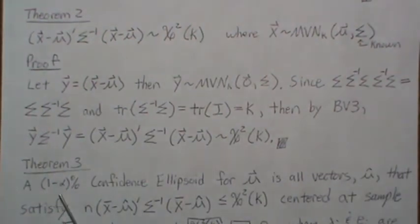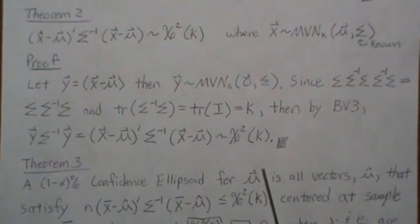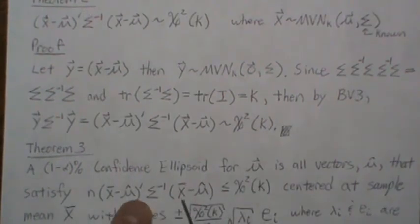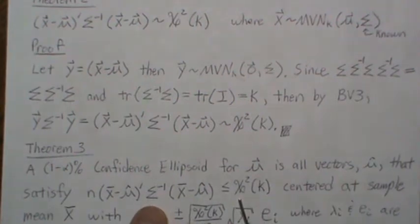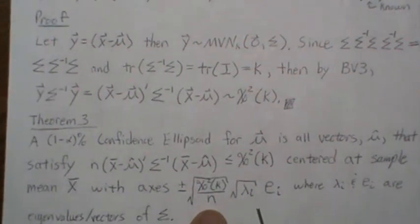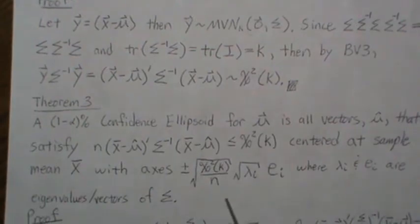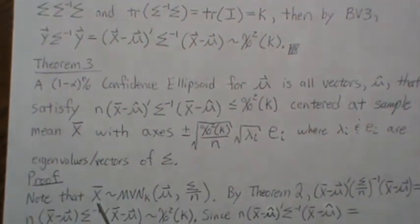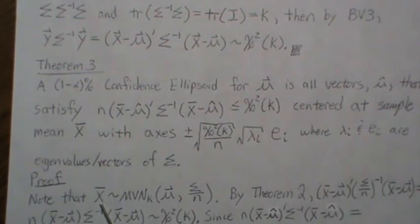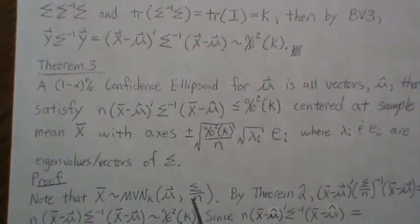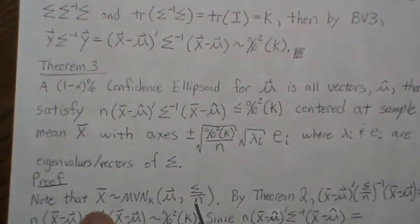Theorem three: the (1 minus alpha) percent confidence ellipsoid for the mean vector consists of all vectors mu-hat satisfying the quadratic form inequality. It is centered at the sample mean and has axes of length determined by the eigenvalues and eigenvectors of sigma. Note that the sample mean X-bar is multivariate normal with the same mean and covariance sigma over n.